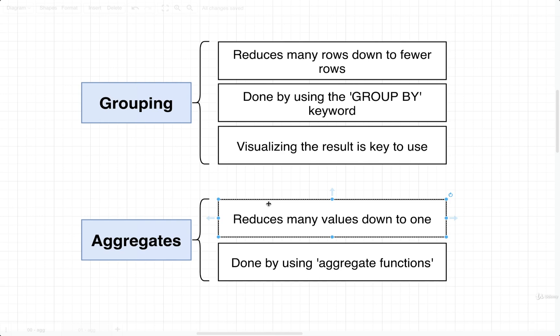We might take many rows, select one column out of all those different rows, and then apply an aggregate function to them. It's going to take all those different values in those different columns and condense them down to one single value. We apply aggregates by using an aggregate function.